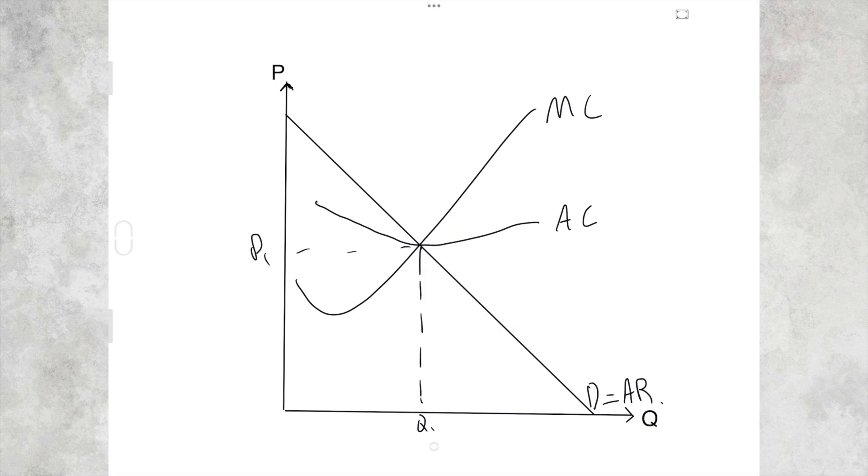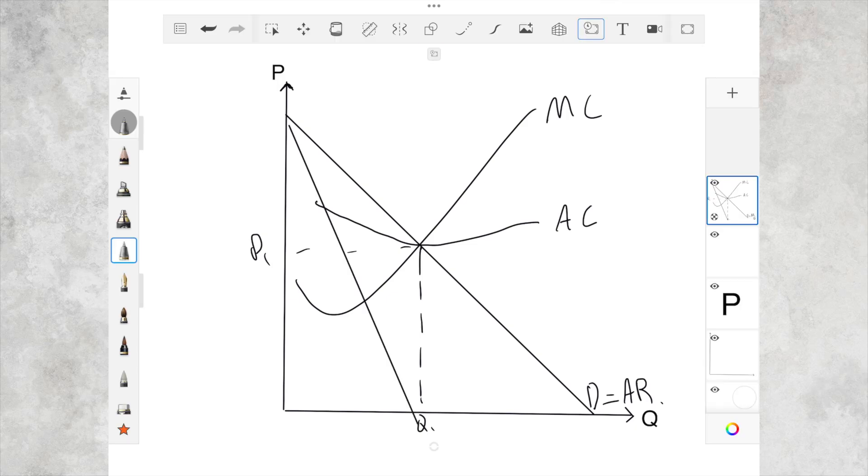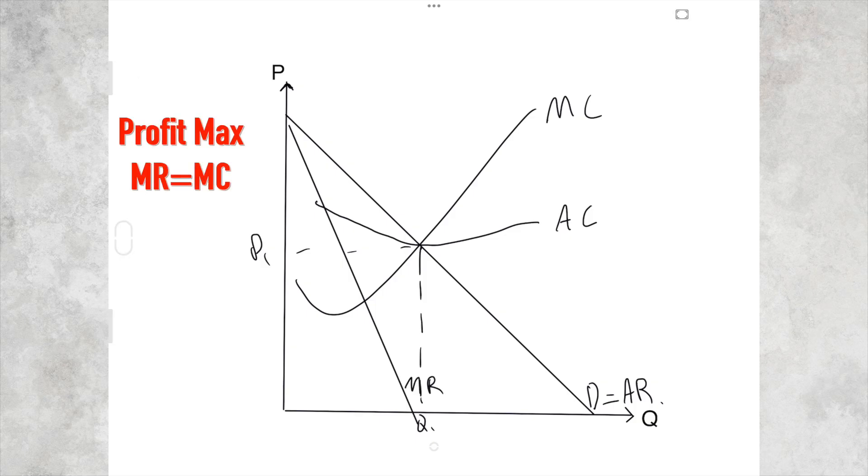But let us assume that this industry gets taken over by a monopoly. So the industry is basically the same as the firm, and the question is where does a monopoly then maximize profit? Well, to maximize profit we need to know the marginal revenue curve. And so that is our marginal revenue curve. Now the next question is where does a firm maximize profits? Where MR equals MC, which would be at this quantity Q2.